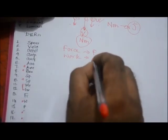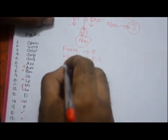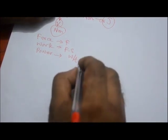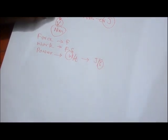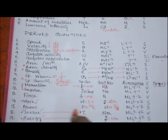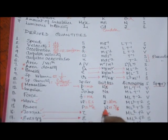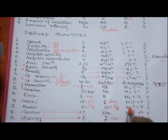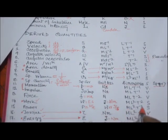Power is the rate of doing work — work done per unit time, W/t. The unit is joule per second, also called watt. The dimension of power is ML²T⁻³, and it is a scalar quantity.